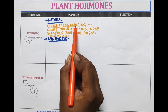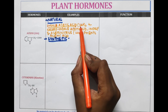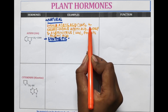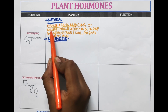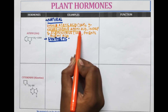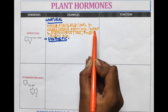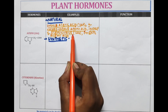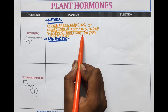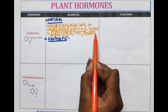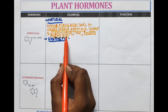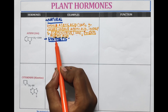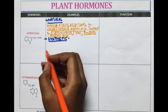To recap: natural auxins are Indole Acetic Acid (IAA), 4-Chloroindole Acetic Acid, Indole-3-Acetonitrile (IAN), and Phenyl Acetic Acid. Now let's discuss the synthetic auxins.